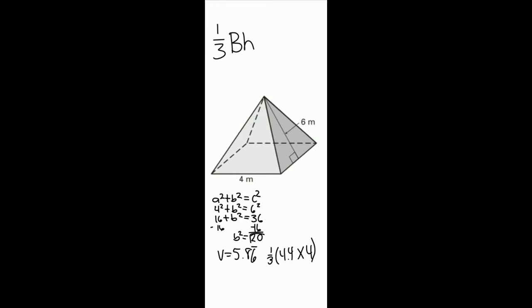The volume formula for a pyramid is one-third the base times height. We start with the Pythagorean theorem and a equals 4² and c equals 6². Square both and a equals 16 and c equals 36.